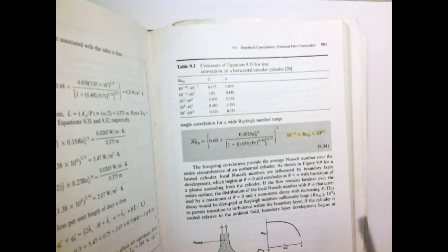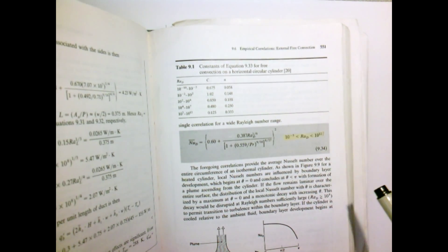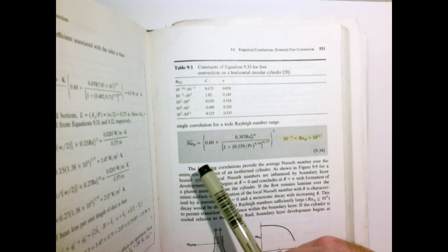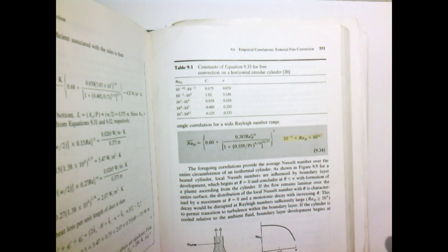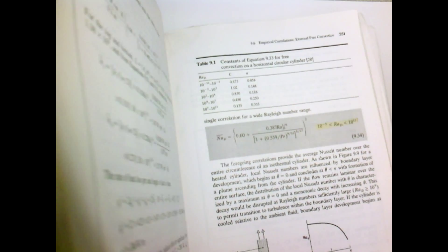This is not exactly new stuff. Again, these correlations simply come from data. People measure the heat transfer performance and then correlate the Nusselt number versus the known dimensionless parameters, Rayleigh number and Prandtl number. That's kind of all there is to it.